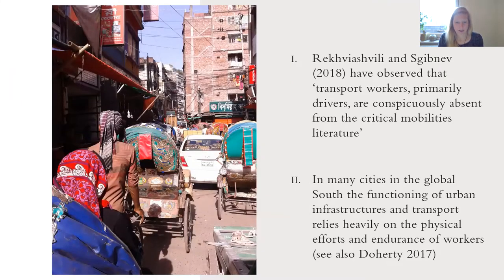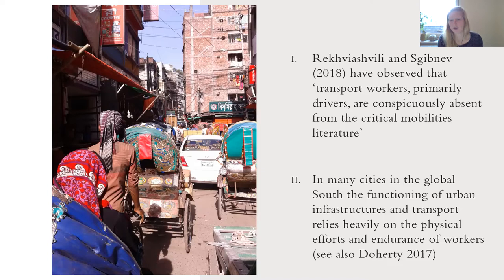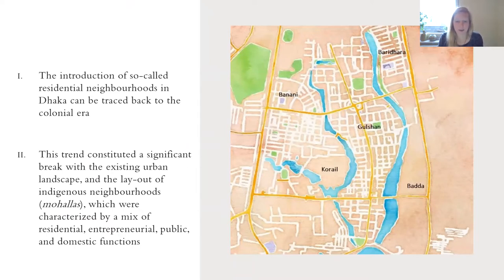Many inhabitants of the Corail slum work in the diplomatic zone as street vendors, domestic workers, security guards, construction workers, or rickshaw drivers. Therefore, to understand how security measures impact spatial segregation, it is not sufficient to look only at residents — it is important to also look at how the mobilities and livelihoods of people who work in these neighborhoods are affected. One of the theoretical aims of my thesis was to move beyond a residentialist approach to the city and urban inequality, drawing on the work of Guido Martinotti.